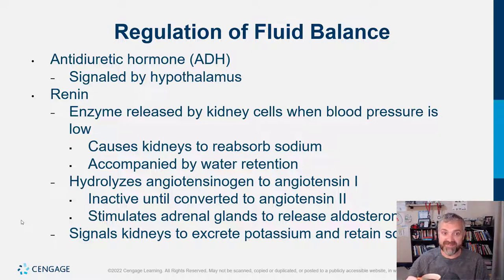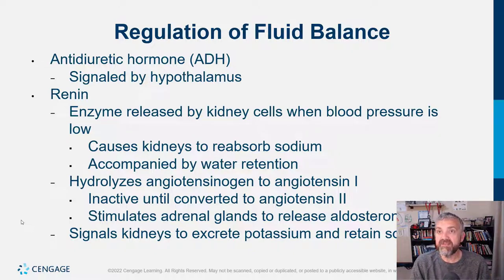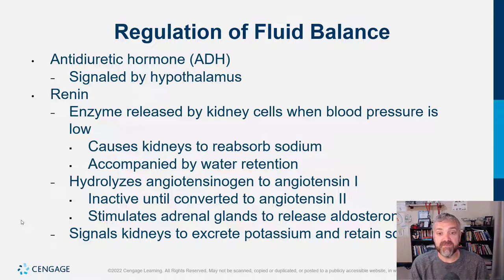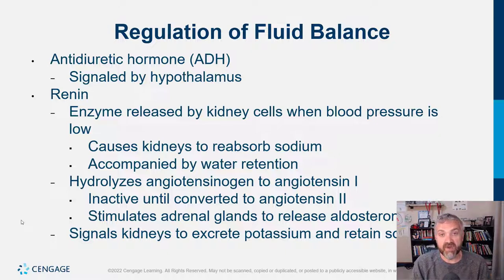The next hormone system involves renin, an enzyme released by kidney cells when blood pressure is low. Your kidneys are a filter — if blood pressure drops by around 20%, your kidneys will stop filtering, which is not good. So if the kidneys sense a drop in blood pressure, they release renin. This causes the kidneys to reabsorb sodium, which draws water with it. This leads to water retention, decreased urine production, and hopefully keeps blood volume and blood pressure up. Remember: where electrolytes go, water follows — that's how osmosis works.